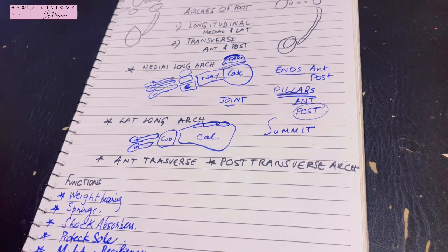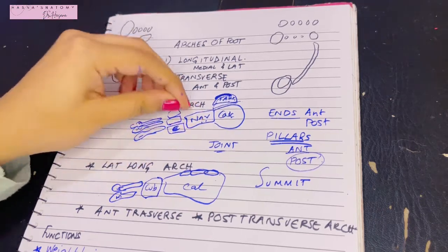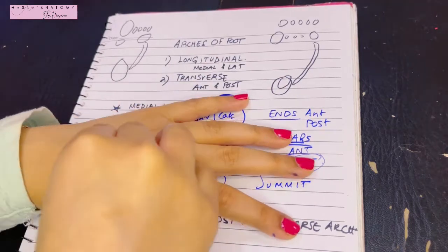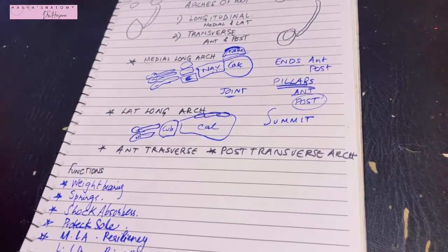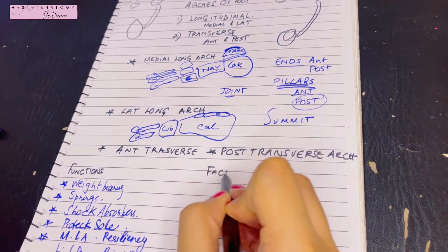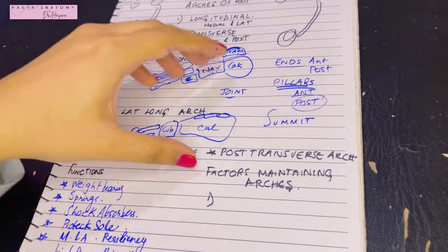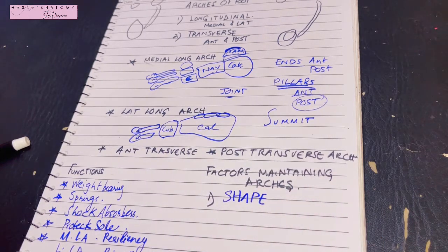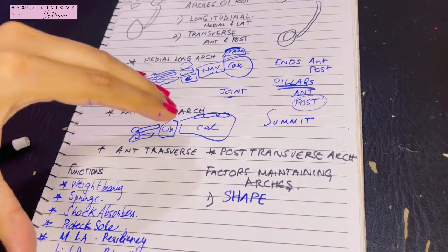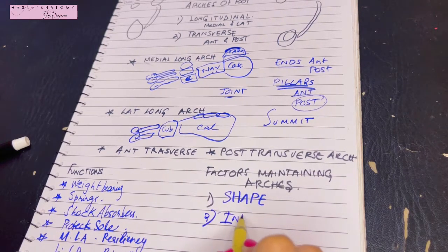Now we'll discuss the major factors that maintain the arches. Imagine the foot is made of bare bones — there have to be ligaments, tissues, and muscles that lift and produce those arches. There are five steps. The first is the shape of the bones: the wedge-shaped bones create a slight concavity that helps form the arch.